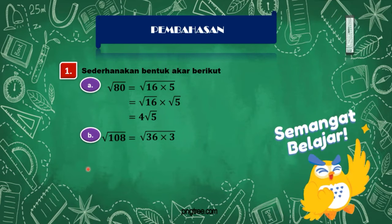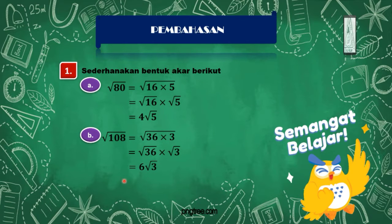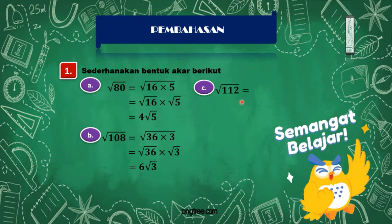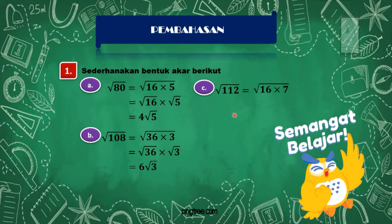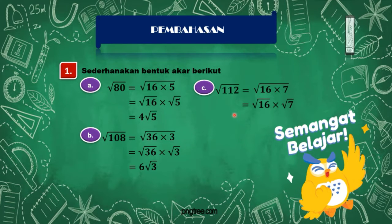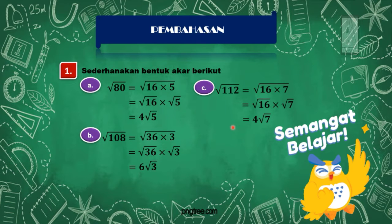Soal yang B, akar dari 108. Nah bisa kita pecah menjadi akar 36 dikali akar 3. Akar dari 36 adalah 6, lalu akar 3 tetap ditulis akar 3. Jadi jawabannya adalah 6 akar 3. Lalu soal yang C adalah akar 112. Dari perkalian akar 16 dikali dengan 7, artinya akar 16 dikali akar 7. Akar 16 adalah 4, lalu akar 7 tetap akar 7. Maka jawabannya adalah 4 akar 7.